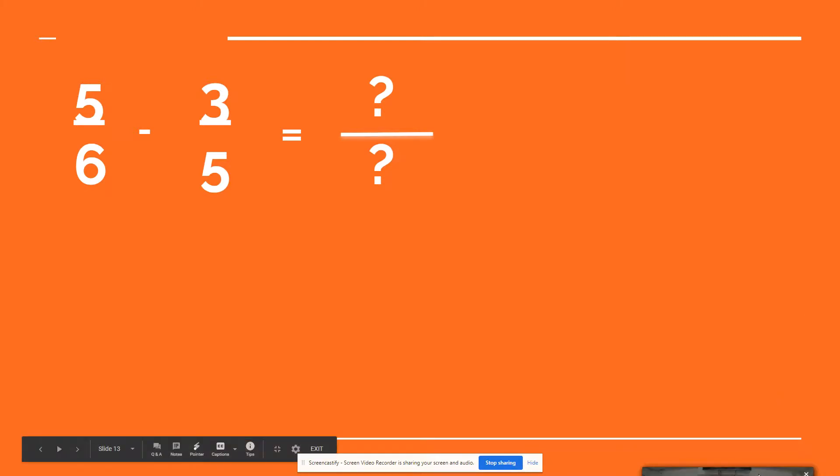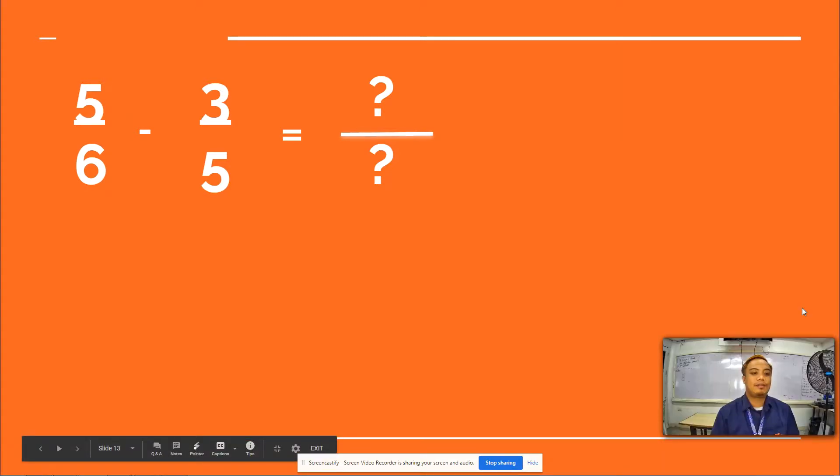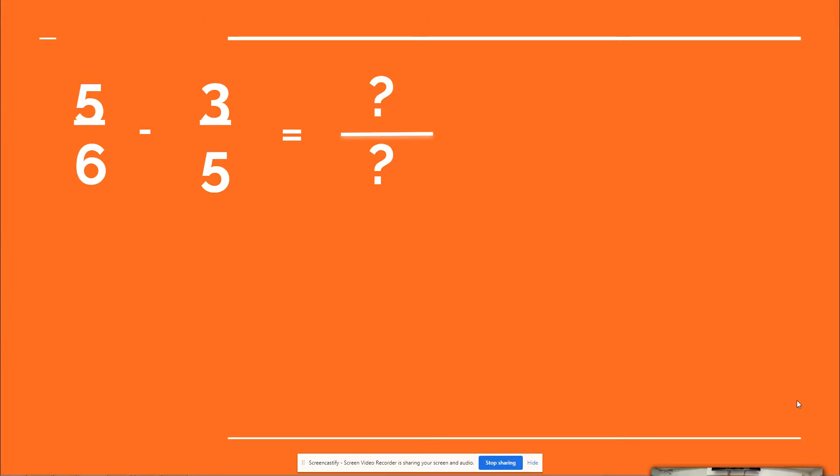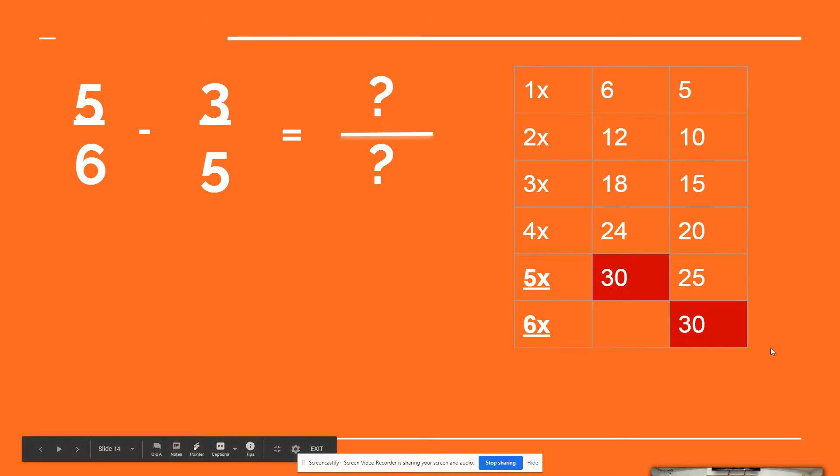Let's say we have 5 over 6 minus 3 over 5. So we have 6 and 5 as the denominators. We have to find the LCD. So 6, 12, 18, 24, and 30.